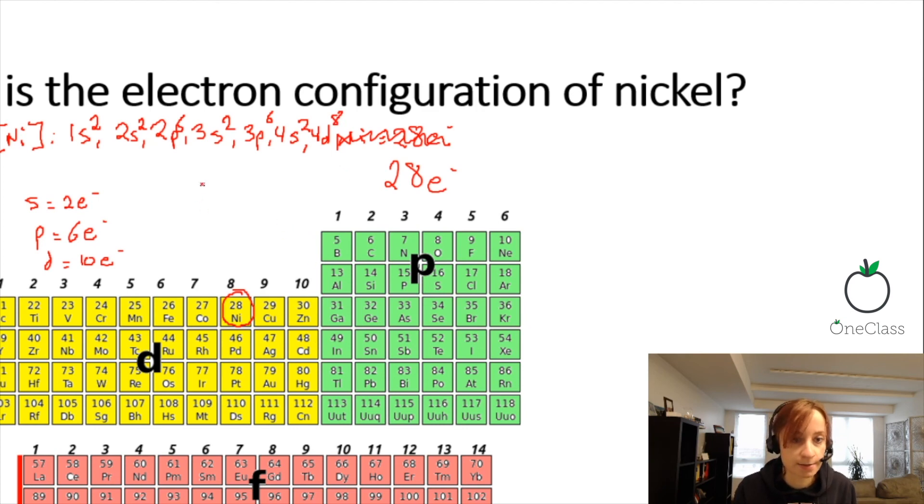That is the electron configuration of nickel. It's good to double check to make sure all your electrons are accounted for. But usually on a periodic table, like on a test or exam, they're not going to be labeled S, D, P, and F. So you're going to have to remember the sections that are S, P, D, and F.